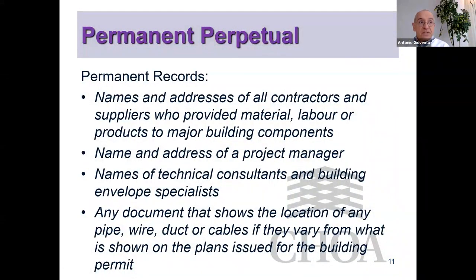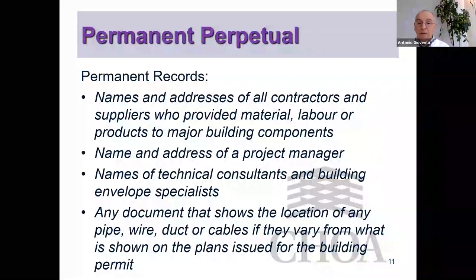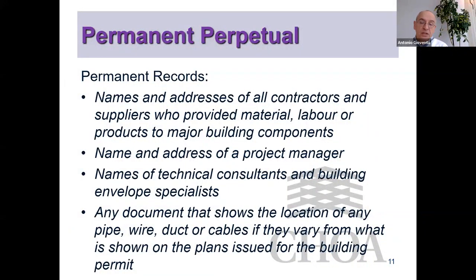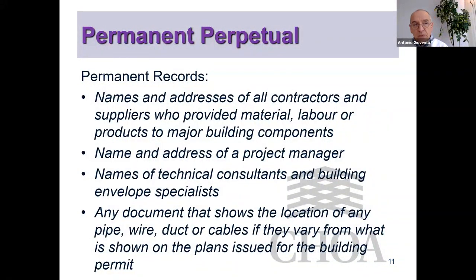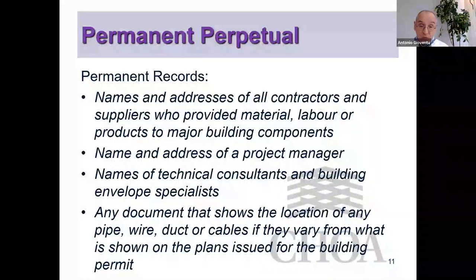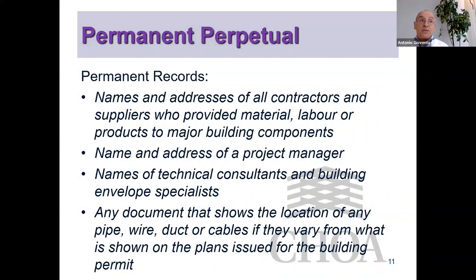Names and addresses of all contractors and suppliers — covering warranty information for everything done on your buildings — must be kept perpetually. This includes people who provide materials, labor, and products to major building components. Also permanent: names and addresses of any project manager or general contractor, names of technical consultants and building envelope specialists, any commissioned engineering reports, building envelope reports, electrical planning reports, sanitation reports, and environmental reports relating to land use and drainage.